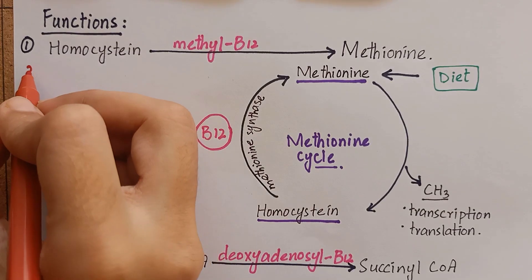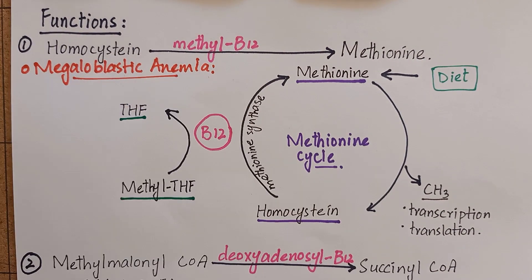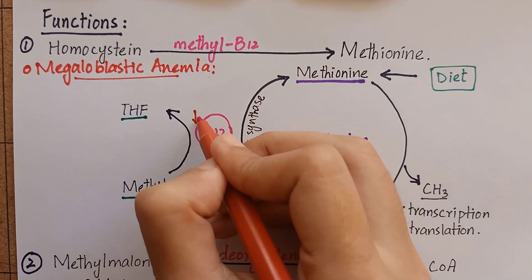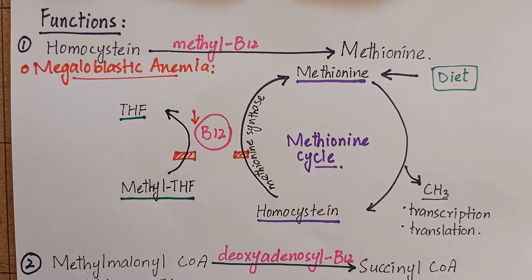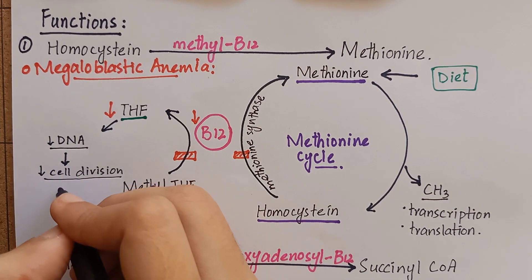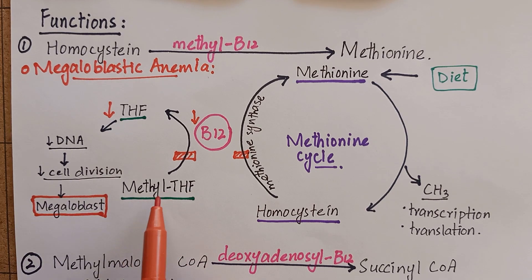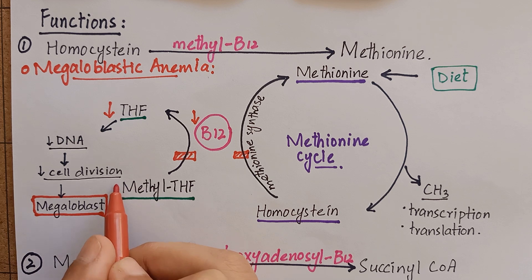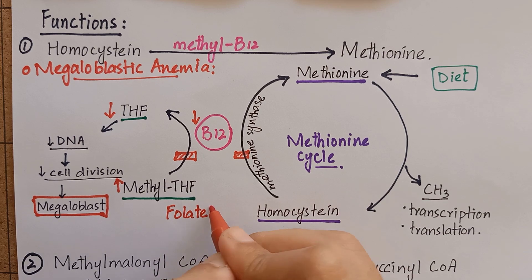Another manifestation of B12 deficiency is megaloblastic anemia. B12 deficiency inhibits the conversion of methyl tetrahydrofolate to free tetrahydrofolate. As a result, there is reduced DNA synthesis and lack of cell division, resulting in large immature cells known as megaloblasts. Inhibition of this reaction causes accumulation of folic acid in the methyl tetrahydrofolate form. This is called the folate trap.